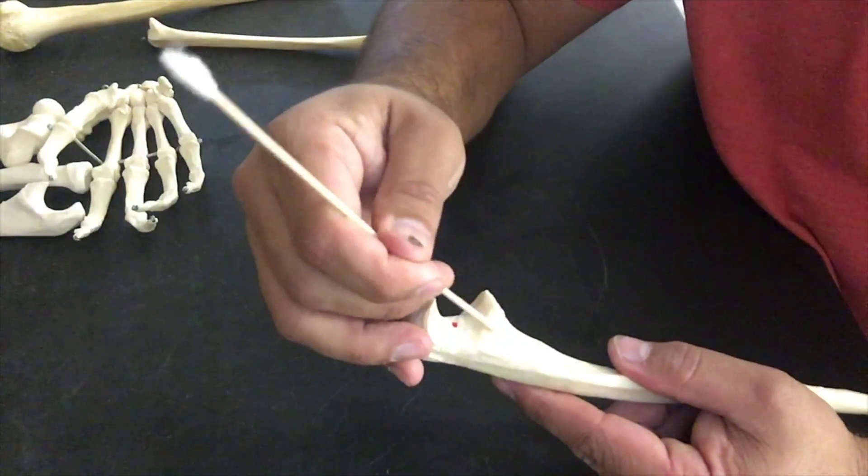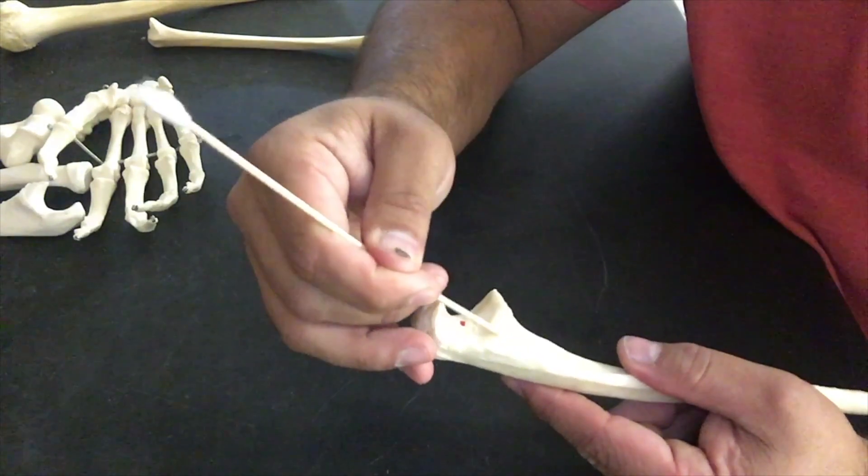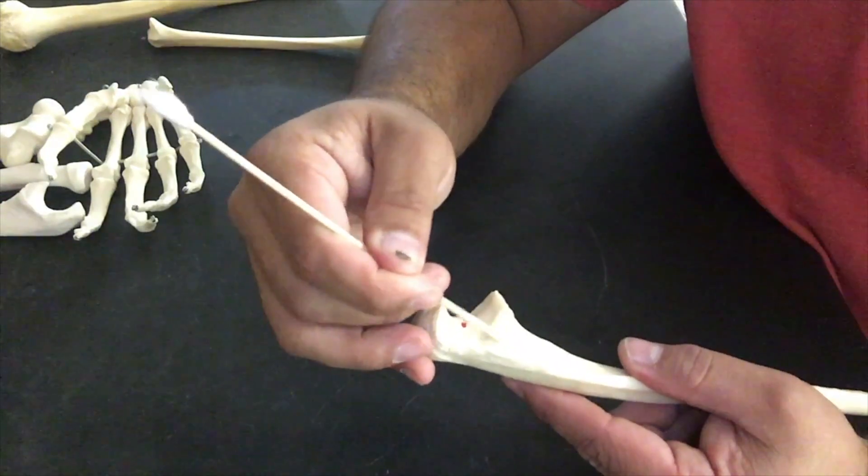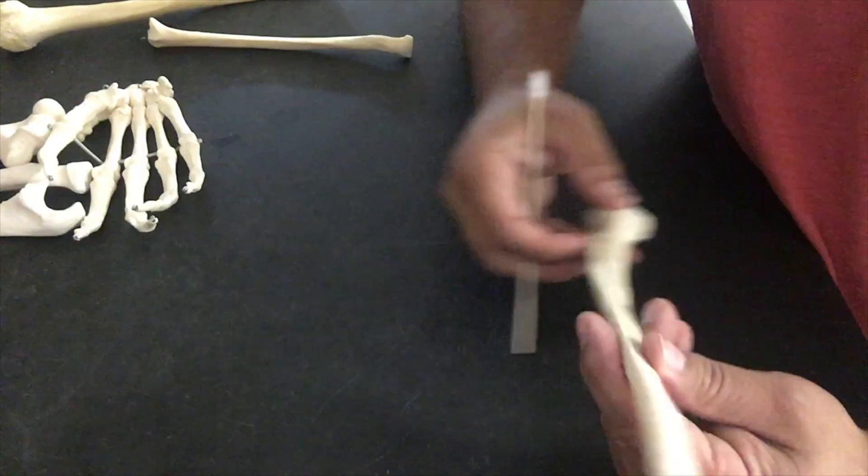Now we have another notch. This is going to be a super important notch right here. You see it's a little smooth and grooved—this is the radial notch. The head of the radius is going to rotate in here, which gives you the ability to rotate and cross these two bones.